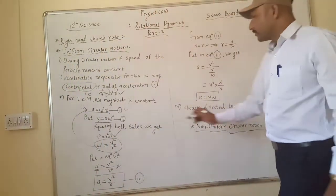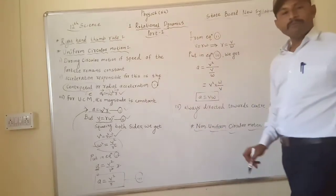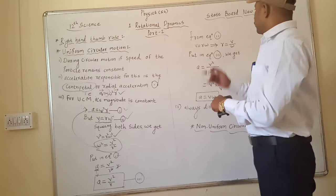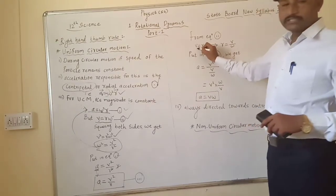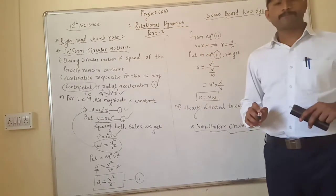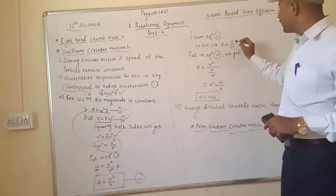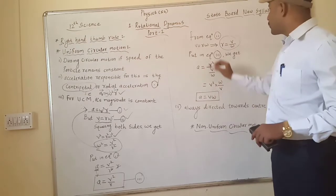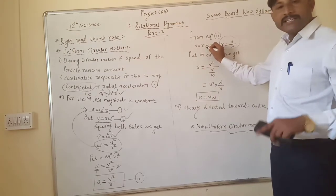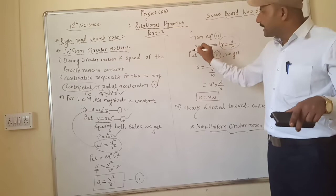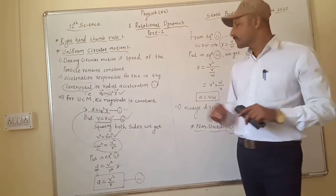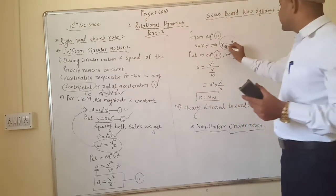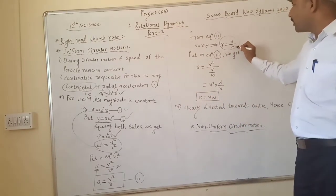This is equation number two. From the relation v = Rω, rearranging gives us R = v/ω, since ω is a multiplying factor and moves to the other side as a divisor.